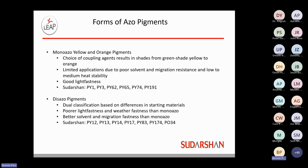There are many forms of azo pigments. The basic classical monoazo yellow and orange pigments are one of the larger choices in azo chemistry. Choosing the coupling agent results in shades from a very green shade yellow all the way through to orange. These are somewhat limited because they have poorer solvent and migration resistance and are on the low to medium end for heat stability. However, they do have very good light fastness. For Sudershan, Pigment Yellow 1, 3, 62, 65, 74, and Yellow 191 fall into this category.